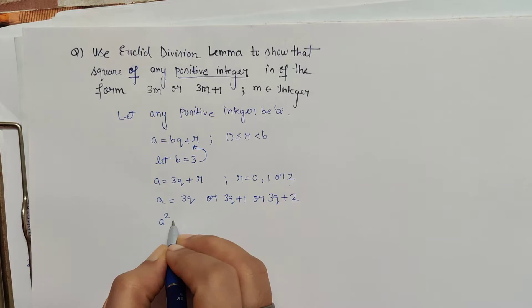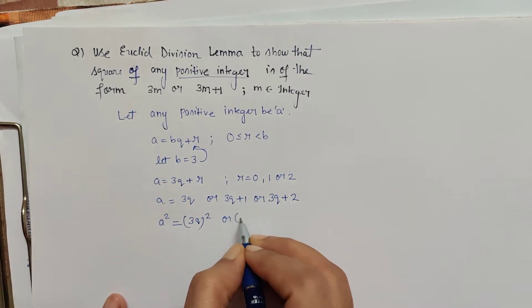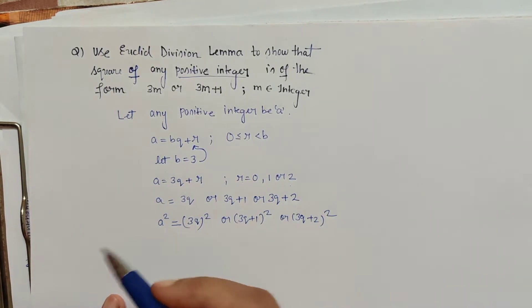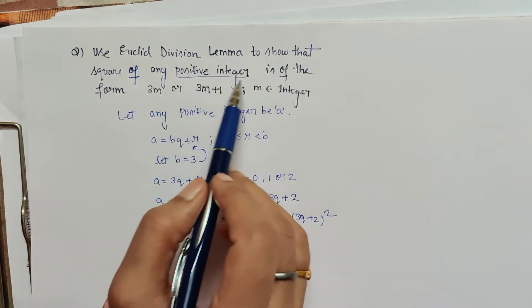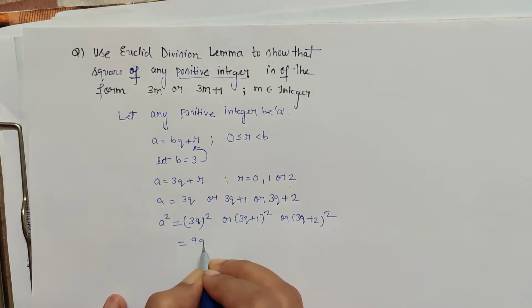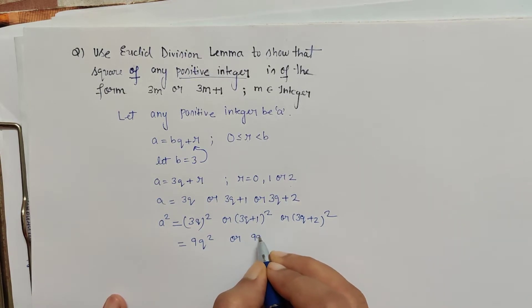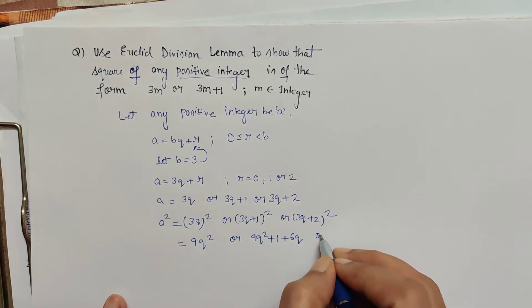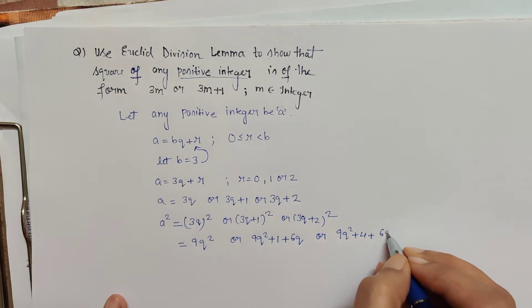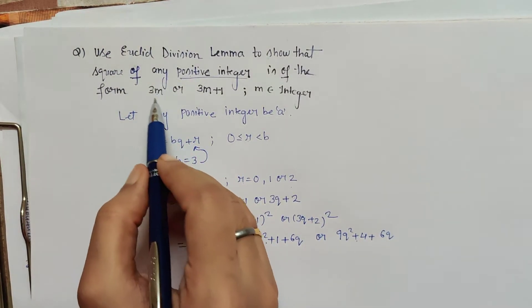The square of the positive integer will be a² = (3q)², or (3q + 1)², or (3q + 2)², because we have to check whether squaring the assumed positive integer gives an expression of the form 3m or 3m + 1. After squaring we get 9q², or expanding using (a + b)² = a² + 2ab + b² for the other cases. We check if the expressions obtained are of the required type.